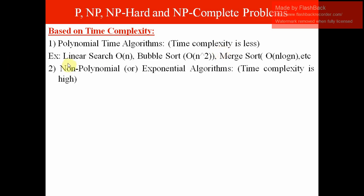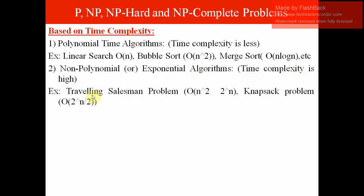The next type is the non-polynomial or exponential algorithms. Their time complexity is high. Examples include the traveling salesman problem and the knapsack problem. The running time of the traveling salesman problem is O(n² × 2ⁿ), and for the knapsack problem it is O(2^(n/2)). These are called non-polynomial or exponential time algorithms.